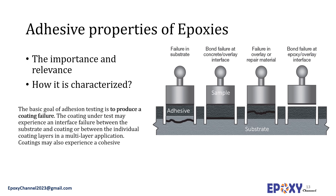For analytical methods for adhesion, when your epoxy resin is supposed to be used for adhesion purposes, the aim of these tests is to see how your material works as an adhesive. The basic goal of adhesive testing is to produce a coating failure. The coating on the test substrate may experience an interface failure between the substrate and coating, or between individual coating layers. For example, if we have an adhesive on a substrate, we apply loads until some kind of failure happens.